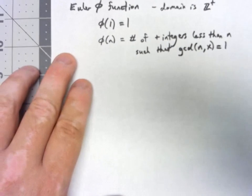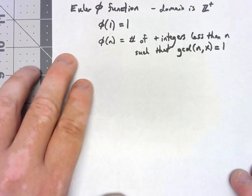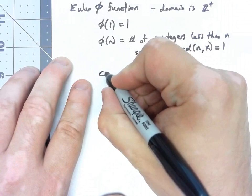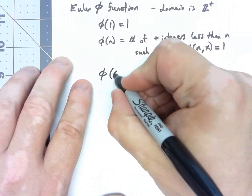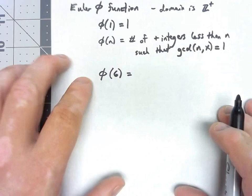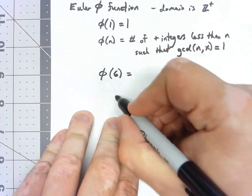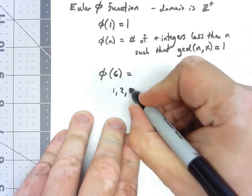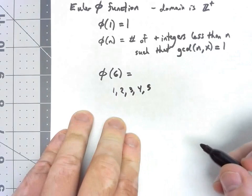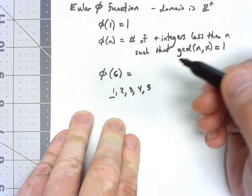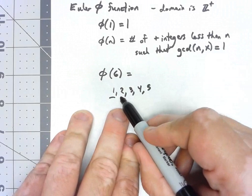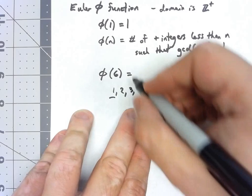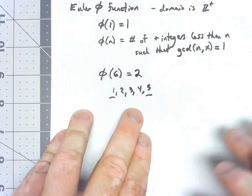So let's just go ahead and look at a couple of examples. If I look at, for example, φ(6), the number of positive integers less than it is 1, 2, 3, 4, 5. 1 is relatively prime, but 2 isn't, 3 isn't, 4 isn't, 5 is. So φ(6) would be 2.